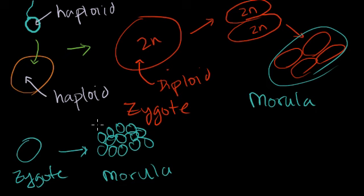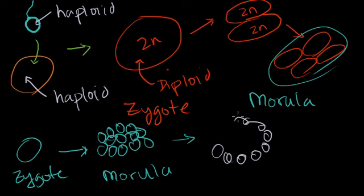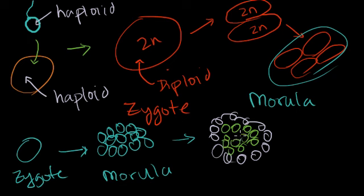Once the morula gets to about 16 cells or so — and we're talking about four or five days, this isn't an exact process — the cells start differentiating a little bit. The outer cells, and this kind of turns into a sphere, start to differentiate from the inner cells. It's really going to look more like a sphere in cross-section, with outer cells and inner cells.